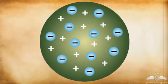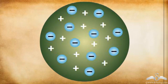He was aware of the structure of atom given by J.J. Thomson, according to which the atom was a positive sphere and the electrons were embedded on this positive sphere.